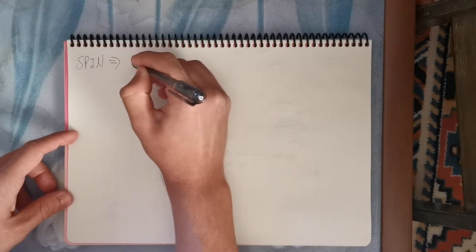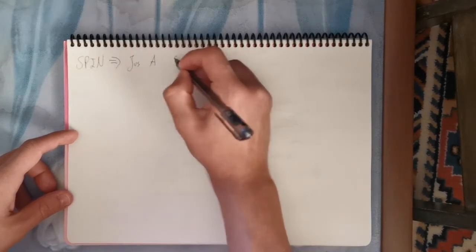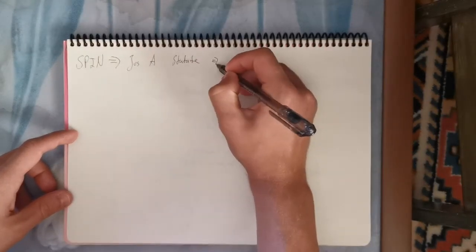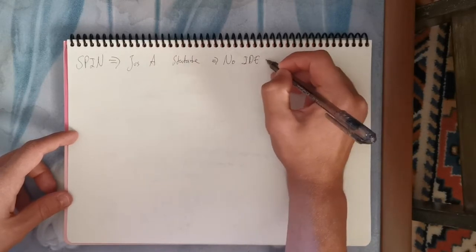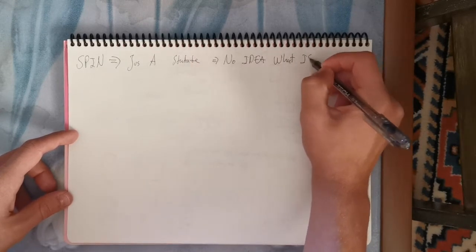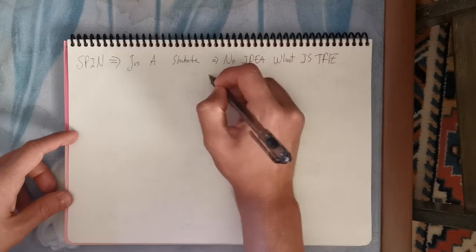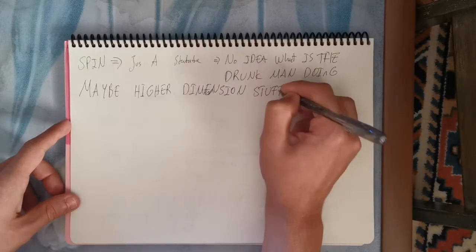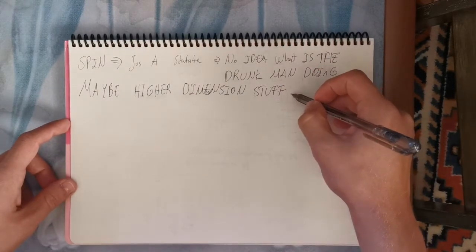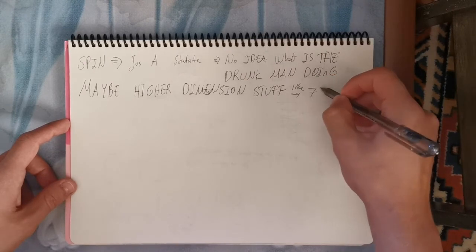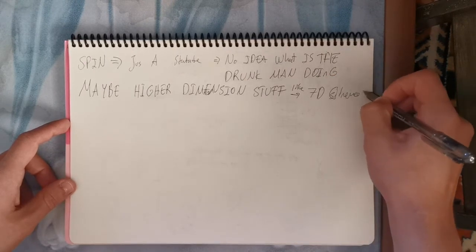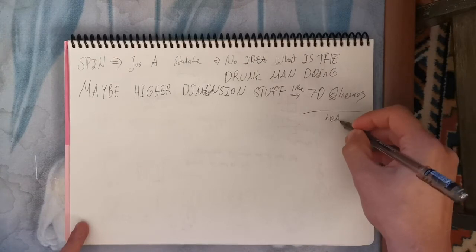So spin is just a state. Electrons choosing to move towards the magnetic field, or to the opposite magnetic field. We have no idea why and how electrons do this, but maybe they are higher dimension objects, and we can't understand, just like 7D, 8D cinemas, which are quite complex. But whatever they are, we can do quite a lot with those knowledge already.